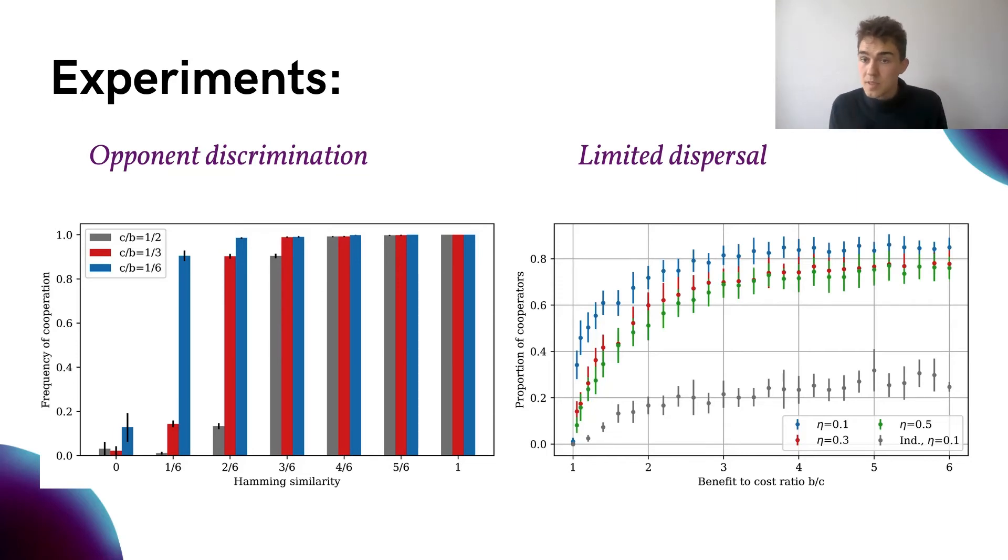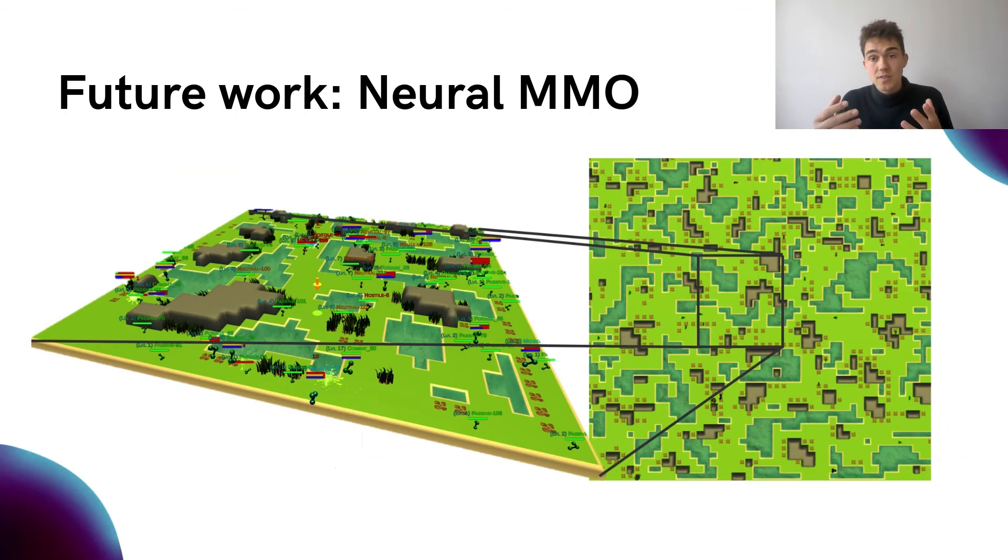The results, shown here on the right, produce higher proportions of cooperation with our inclusive rewards than with individual rewards, even though some level of cooperation can emerge without inclusiveness in accordance with previous work on network games. Small dispersal coefficients and large benefit-to-cost ratios also lead to higher levels of cooperation, which matches with our prediction based on limited dispersal theory.